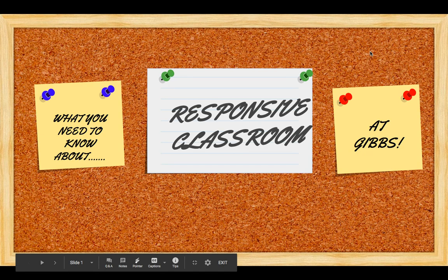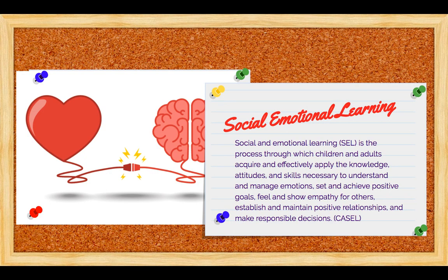What you need to know about Responsive Classroom at Gibbs: first of all, you need to start with a real understanding of social emotional learning and what we define it to be. It is the process through which children and adults acquire and effectively apply the knowledge, attitudes, and skills necessary to understand and manage emotions, set and achieve positive goals, feel and show empathy for others, establish and maintain positive relationships, and make responsible decisions.